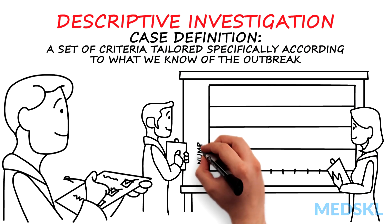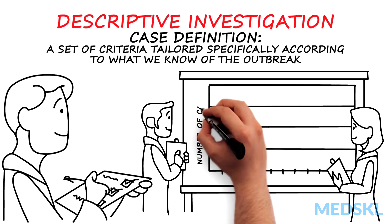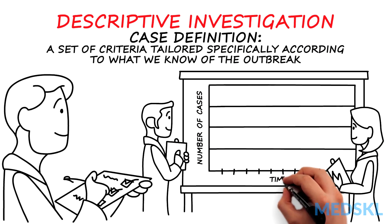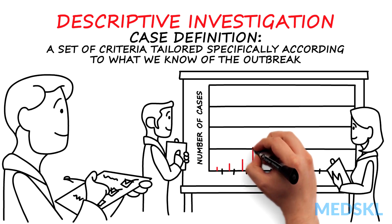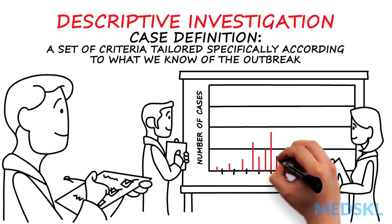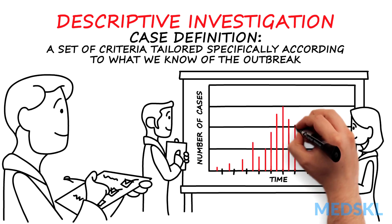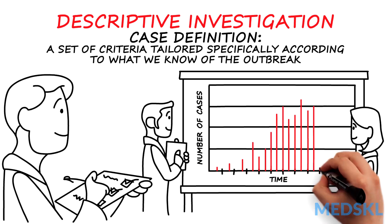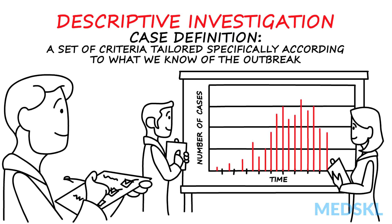We search for common risk factors. In outbreaks of suspected transmissible disease, an epidemic curve may be drawn to give clues to the type of source, how the disease is transmitted, and the incubation period.